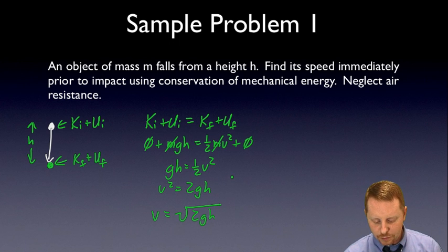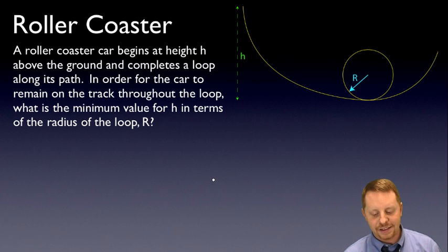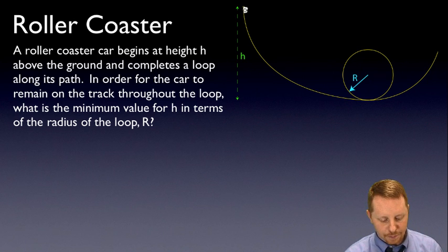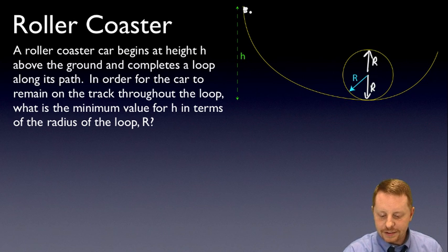Let's take a look at another, slightly more complex example that's a classic problem in physics. A roller coaster car begins over here at some height h above the ground, and it completes a loop along its path of radius r. In order for the car to remain on the track throughout the loop, what minimum value for h in terms of the radius of the loop r is required. We're going to assume frictionless. If that is one radius, then that must be another radius, so the height of the loop is 2r.